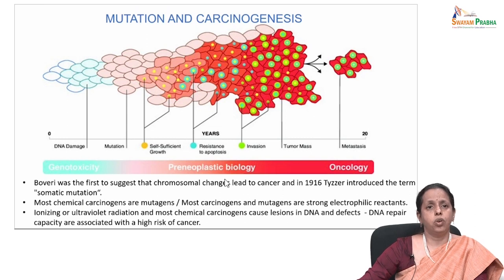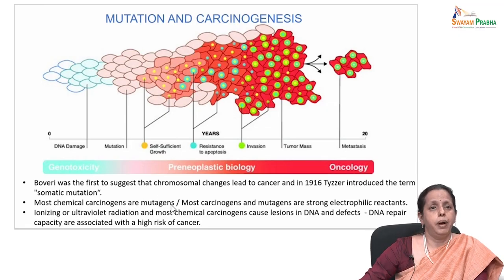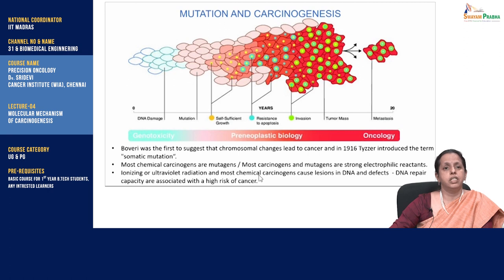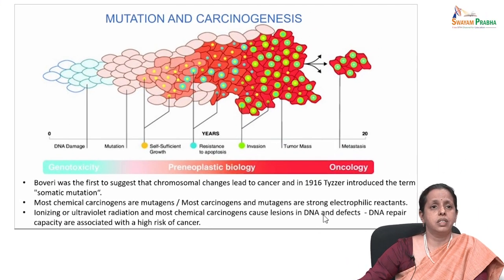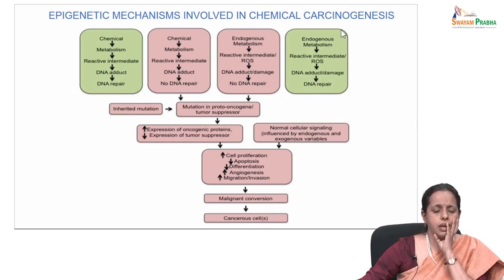Boveri was first to suggest that chromosomal changes lead to cancer, and in 1916 Tyzzer introduced the term 'somatic mutations'. Most chemical carcinogens are mutagens, but not all mutagens are carcinogens — there is an important analogy here. Most carcinogens and mutagens are strongly electrophilic reactants. Ionizing or UV radiation and most chemicals cause lesions in DNA, and these defects are associated with a high risk of cancer. One important term is epigenetic mechanisms involved in chemical carcinogenesis.